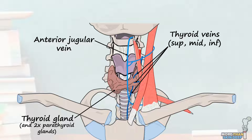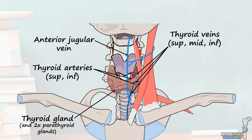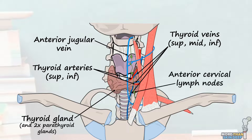The two major arteries in the muscular triangle are the superior thyroid artery, which comes in just underneath the omohyoid muscle, and the inferior thyroid artery, which enters the triangle very deeply behind the thyroid gland. There are also a number of anterior cervical lymph nodes that lie superficially within the triangle.